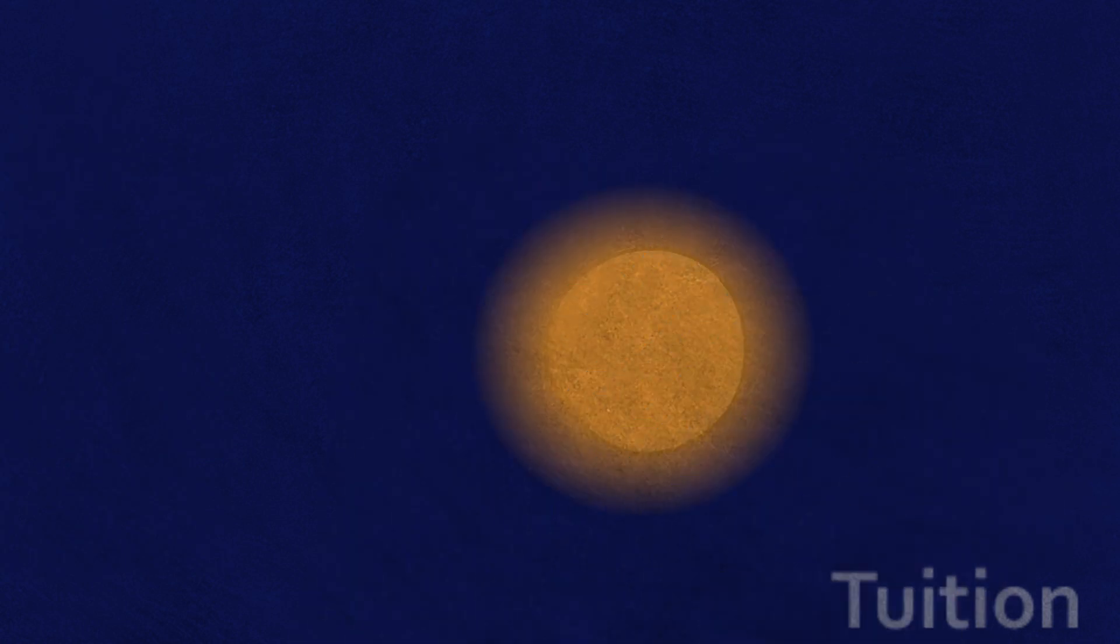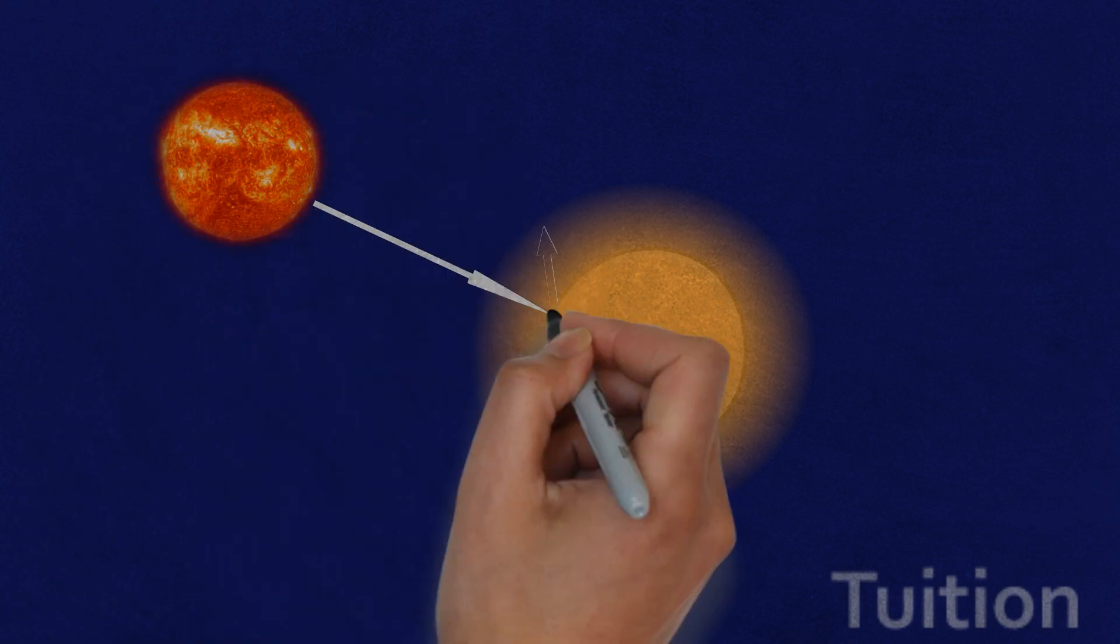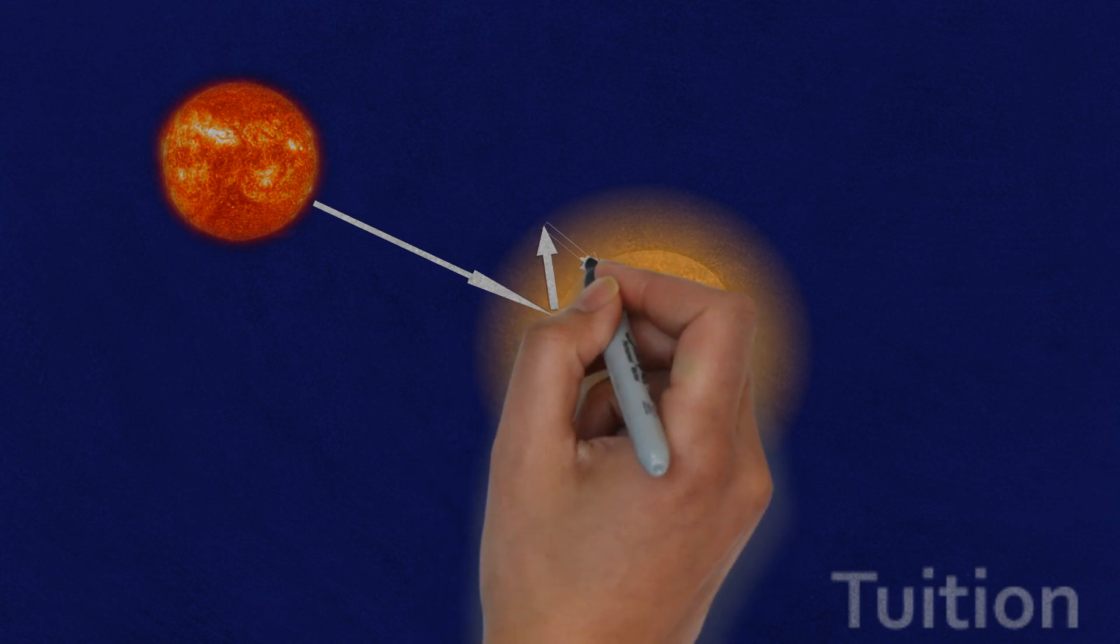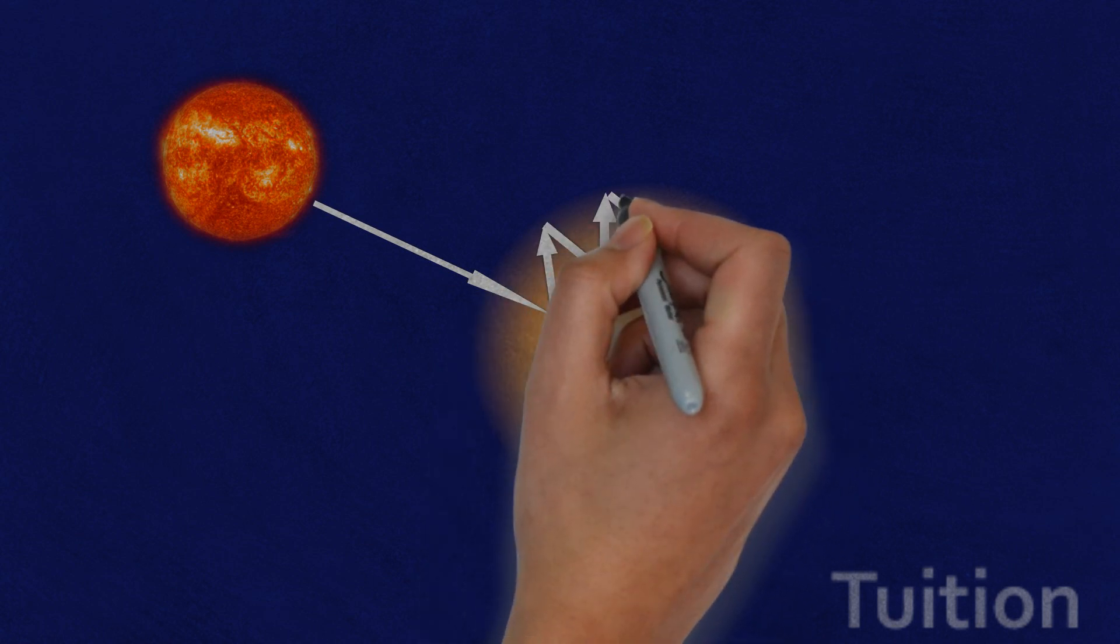Venus also shows us what happens when carbon dioxide levels just keep rising. Radiation from Sun is absorbed by the planet and the infrared emitted is trapped by carbon dioxide which creates a runaway greenhouse effect.